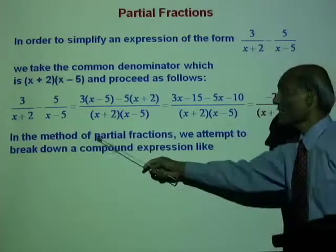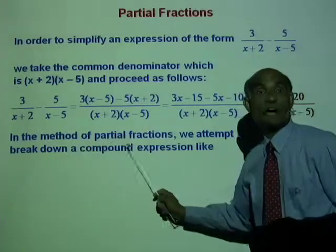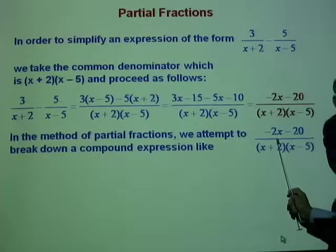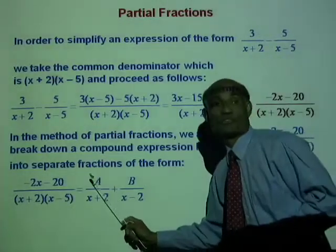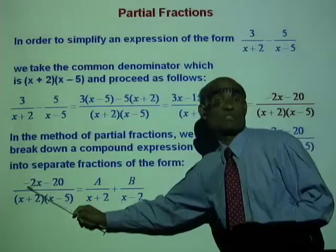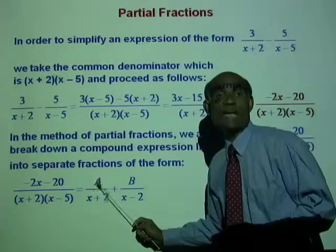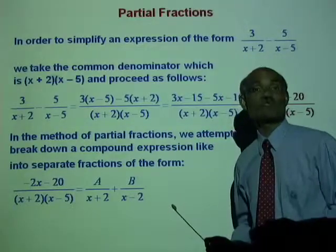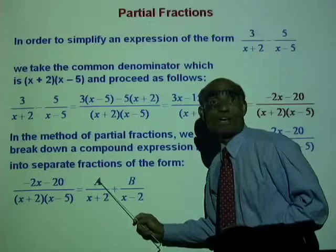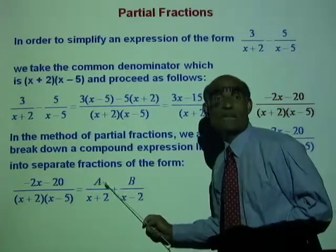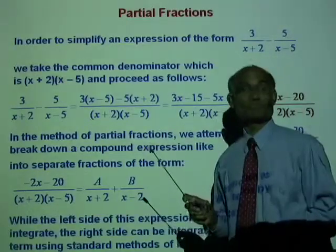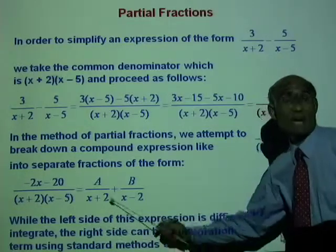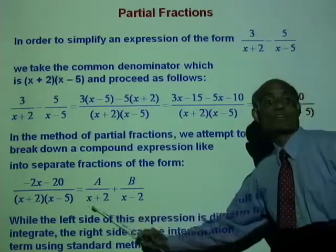In the method of partial fractions, we attempt to break down complex expressions into separate fractions. To begin with, we say let this complex expression be equal to A over x plus 2 plus B over x minus 2. Once we do this, all we need to do is obtain the values of A and B so that the expression on the left can be broken down into these two simpler forms. While the left side is difficult to integrate, we can integrate the right side.